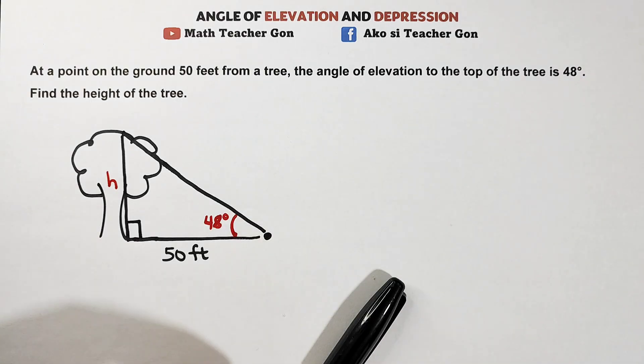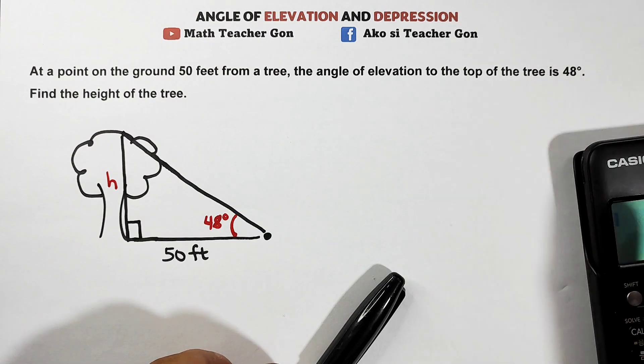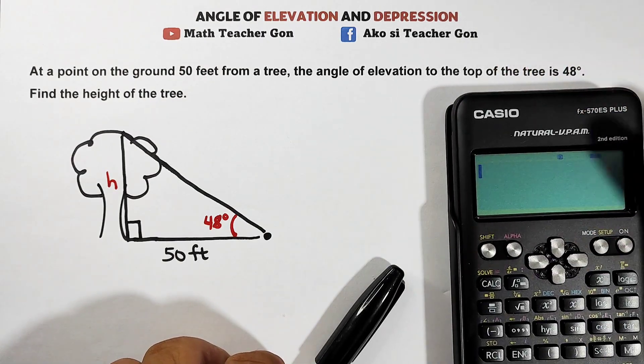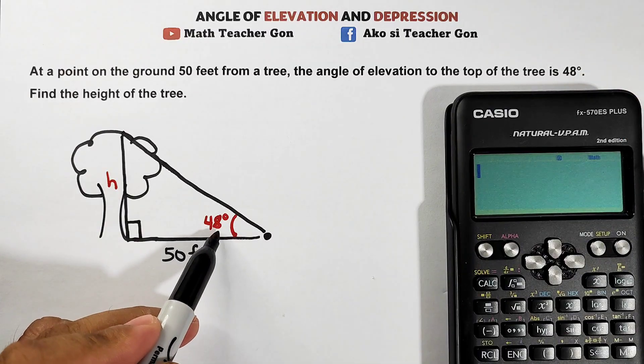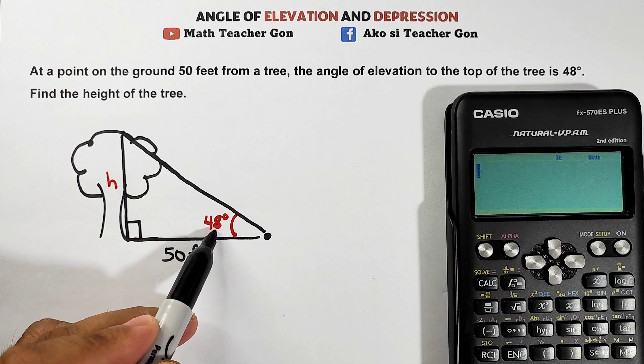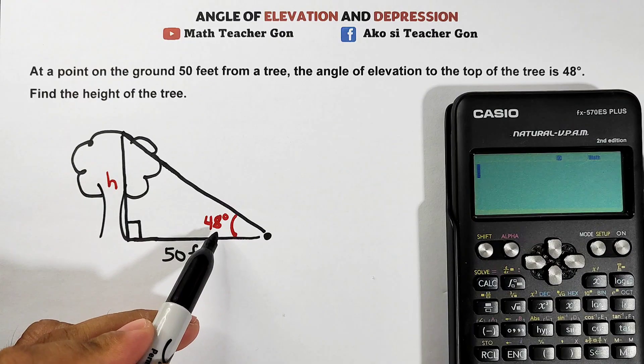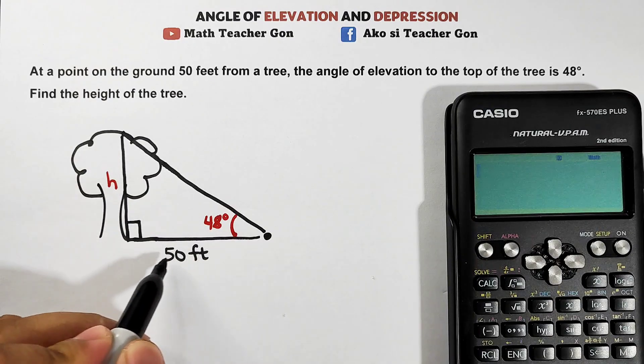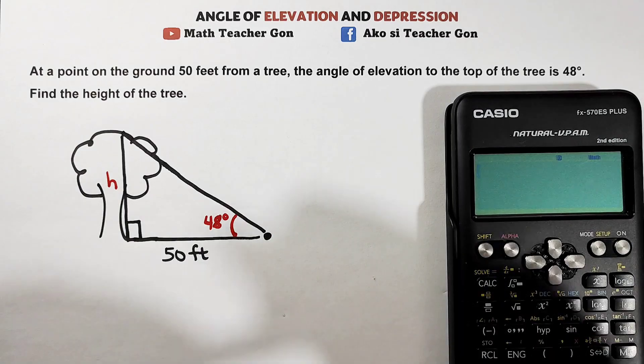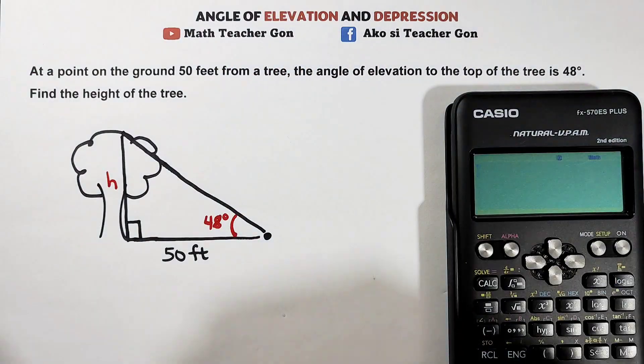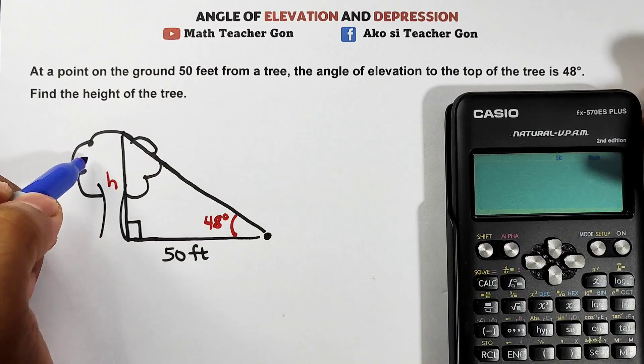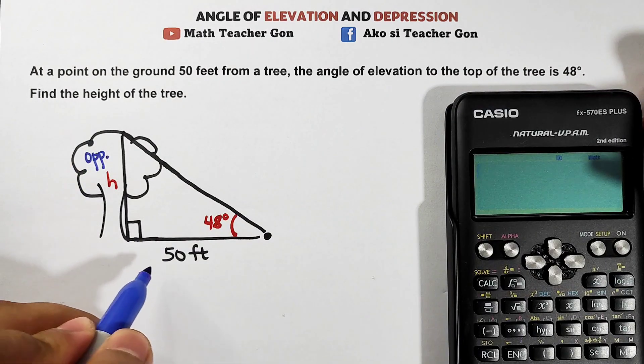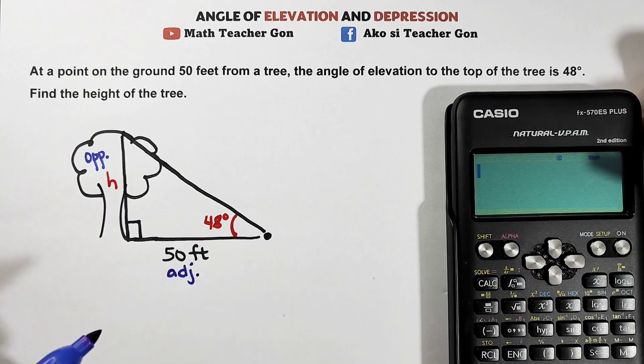We will use the trig ratio and we'll use a calculator. But the question is, what trig ratio are we going to use? Now with respect to your angle of elevation which is 48 degrees, you're looking for h or height and you have a given of 50. In our ratio, this height is our opposite side.